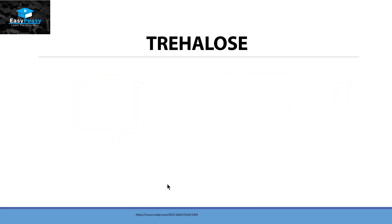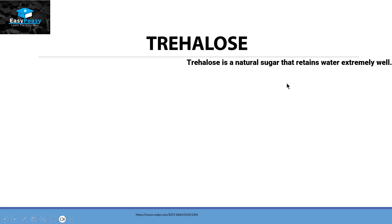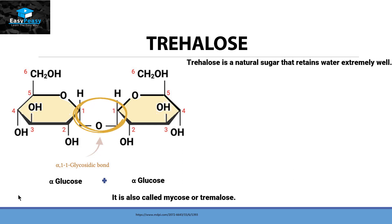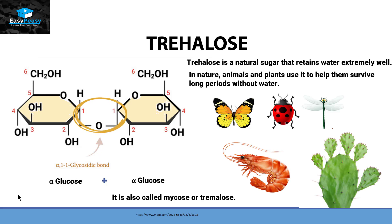The next disaccharide is trehalose. Trehalose is a naturally occurring disaccharide with the property of retaining water. Its structure is made up of two alpha-glucose units, and the bond they form is called an alpha-1,1 glycosidic bond. Trehalose is also known as mycose or trimalose. Due to its water-retaining properties, it is usually found in animals and plants that need to survive without water for longer periods of time.